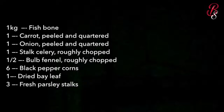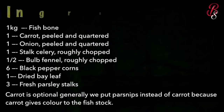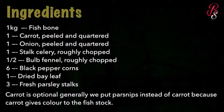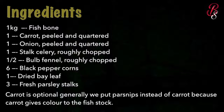Here are the ingredients for making a perfect fish stock: one kg of fish bones, carrot, onion, celery, bulb fennel, black peppercorns, dried bay leaf, fresh parsley. Since this is a white stock, we don't add carrot because it gives an orange color. Instead, we substitute carrot with parsnips — it won't give color but will give perfect flavor and richness.